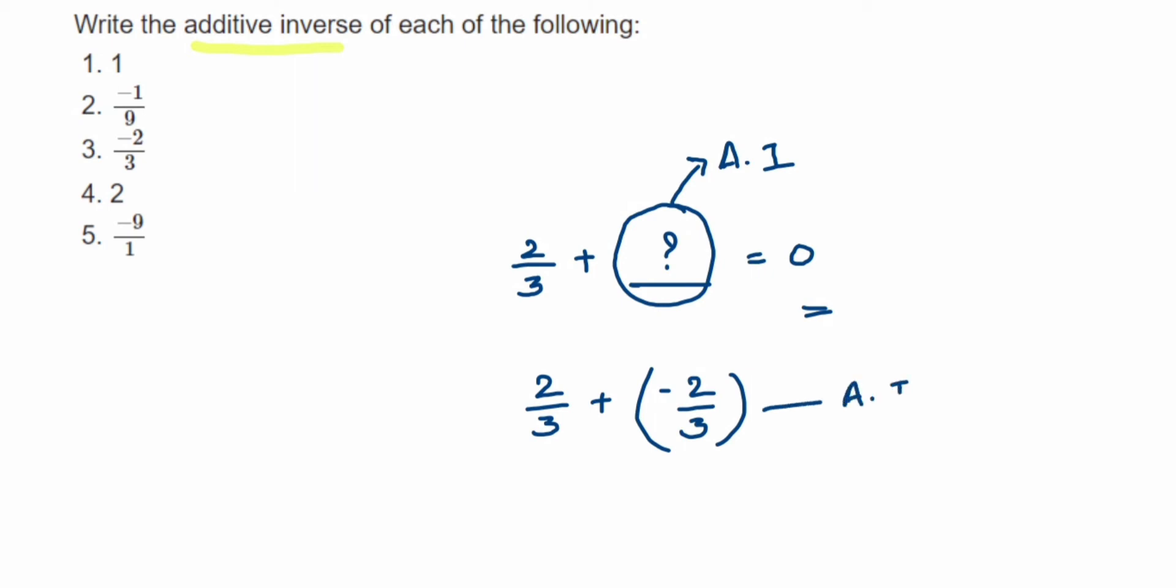It's very simple. You have to write down the same rational number with opposite sign. For example, suppose we have minus 1 by 5. Additive inverse of minus 1 by 5 will be 1 by 5. When you add these two, you will get the answer 0.